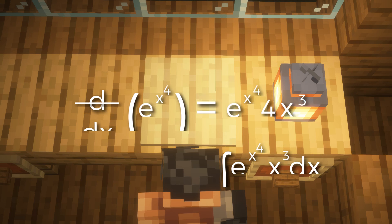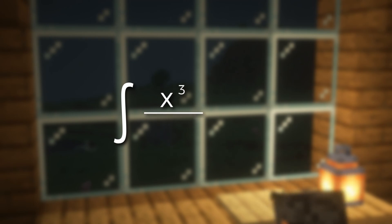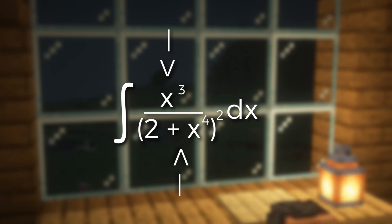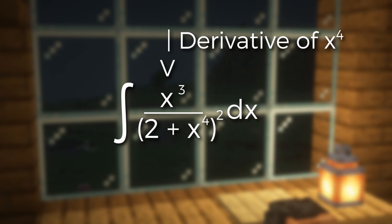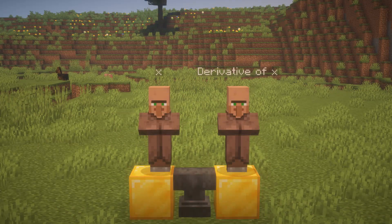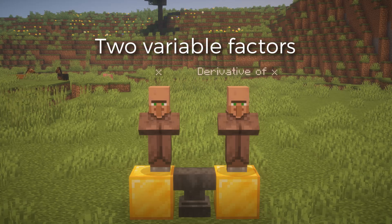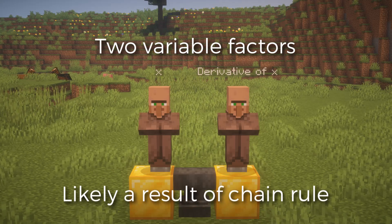Let's look at another function: the integral of x to the power of 3 divided by 2 plus x to the power of 4, all to the power of 2. This one may look daunting but remember the criteria — there are two variables being divided, and they are clearly a product of the chain rule. So pretty much, if you notice that one of the variables being multiplied is the derivative of the other, chances are it is a U-sub case.